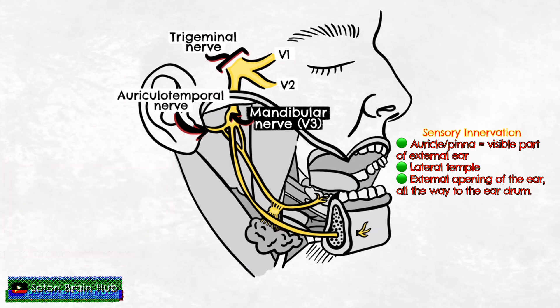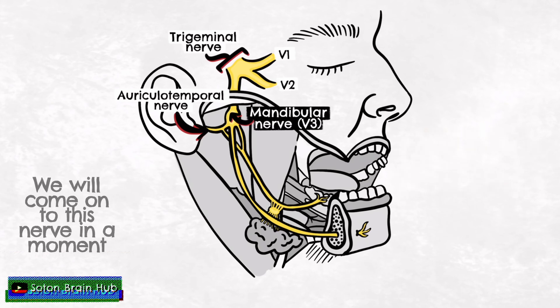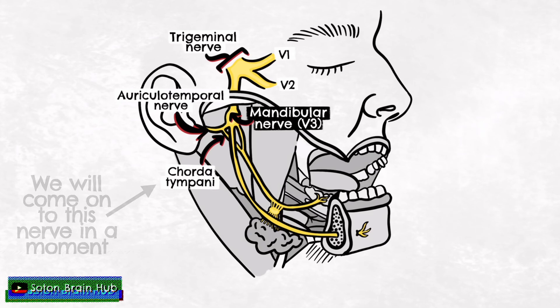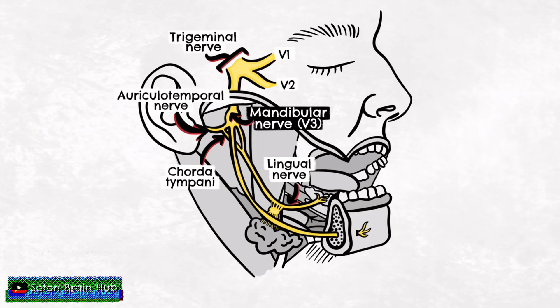The next branch of the mandibular nerve is the lingual nerve. This is a sensory nerve but also carries fibres from the facial nerve, which is cranial nerve 7. These fibres are called special sensory and autonomic fibres. The general sensory fibres in this branch provide general sensory innervation to the anterior two thirds of the tongue.